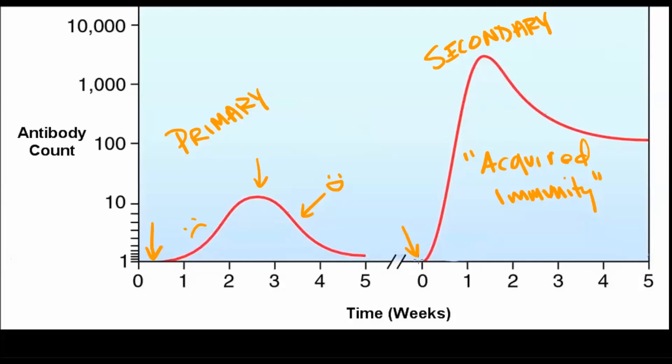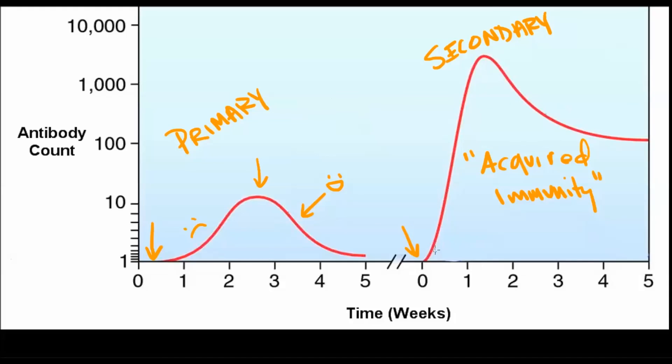Here, after the second exposure, mature, battle-hardened memory cells reproduce, yielding a rapid, aggressive secondary immune response.